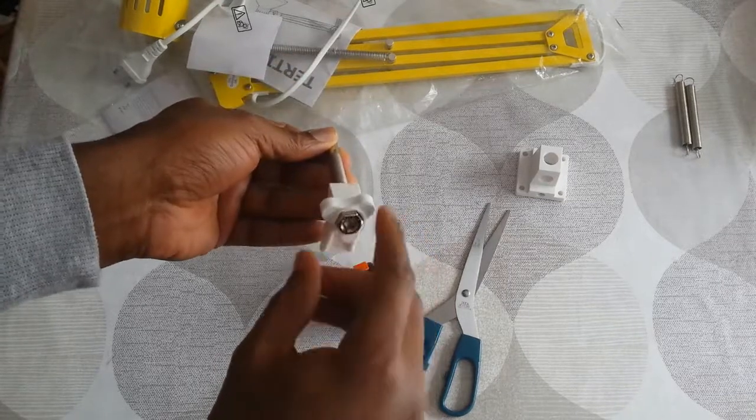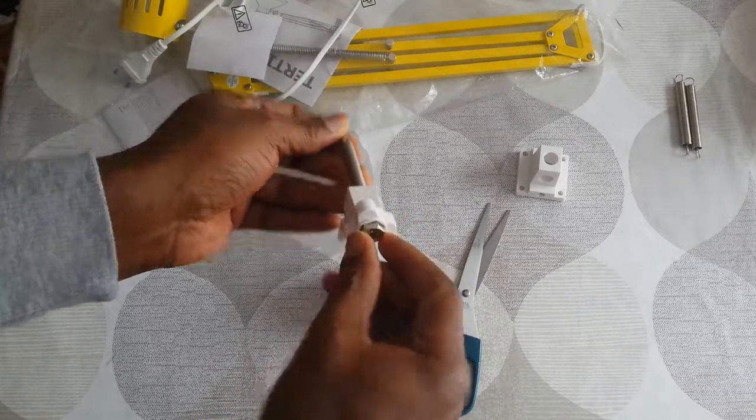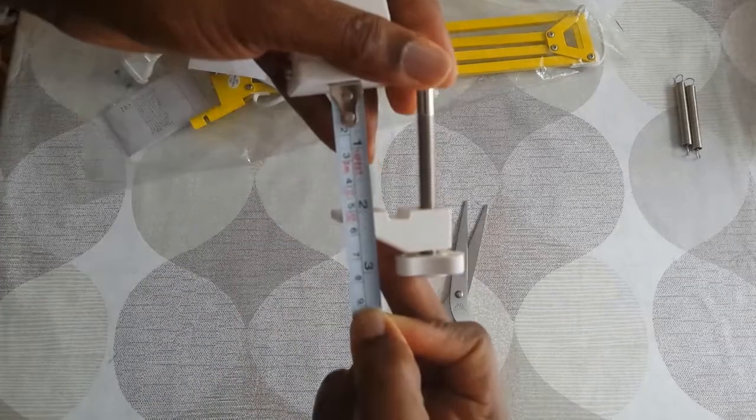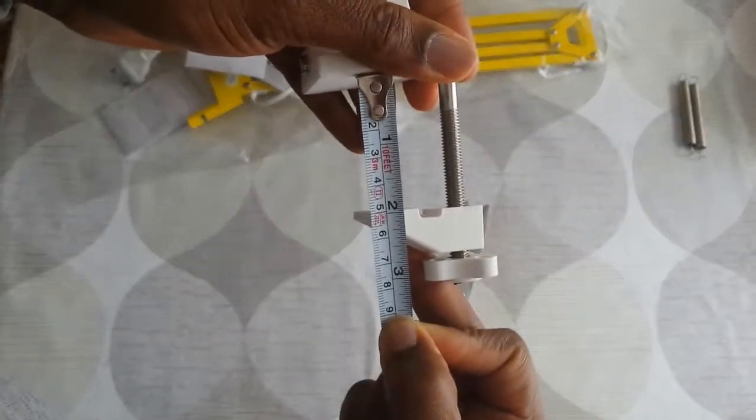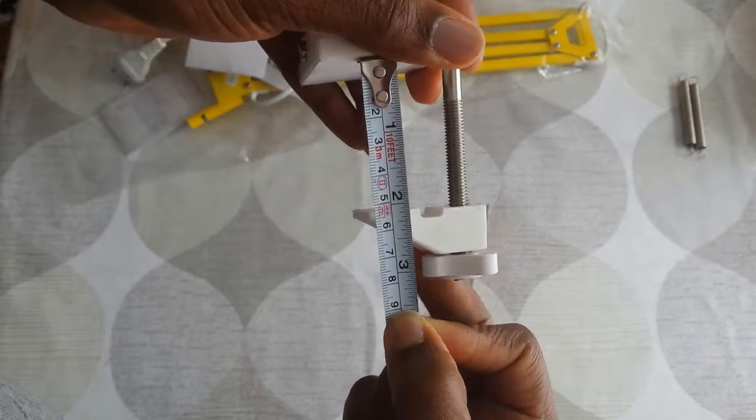So now I'm going to try to show you the maximum allowance for the system that retains the mount to the table. Just a little bit over 2 inches, 5 and a half centimeters.